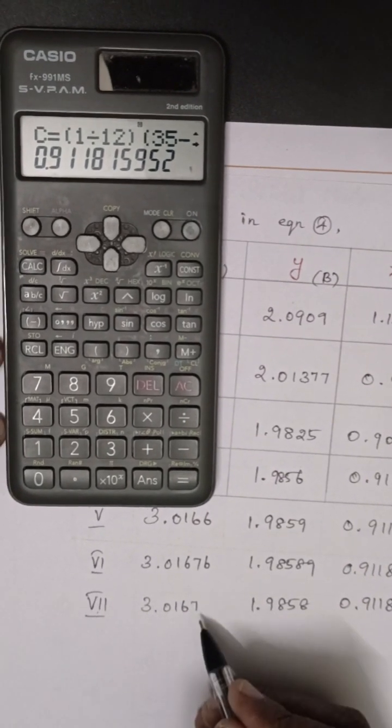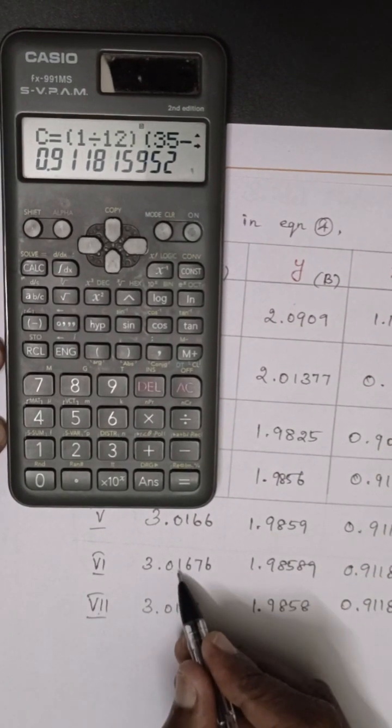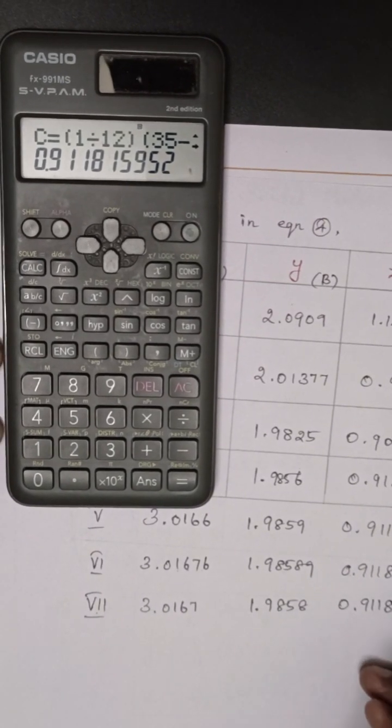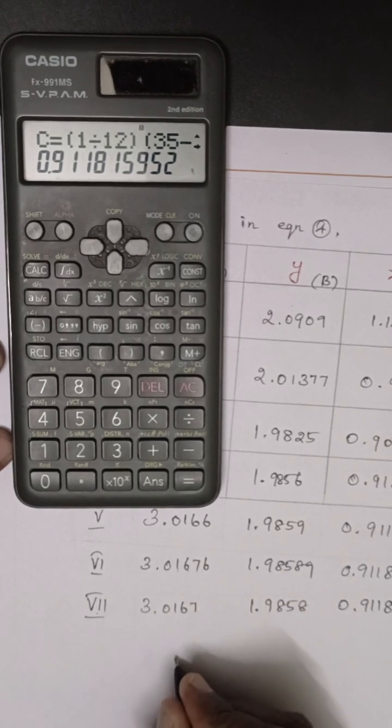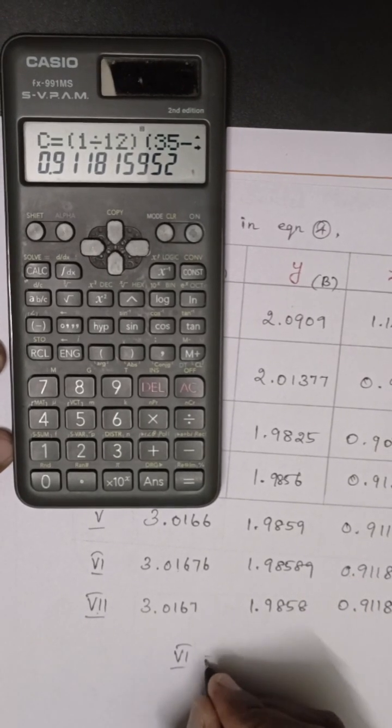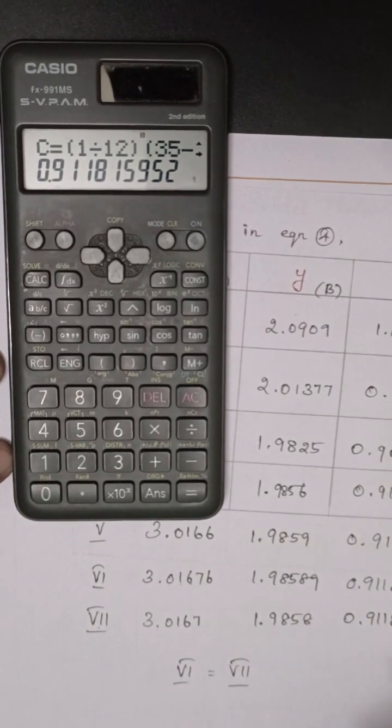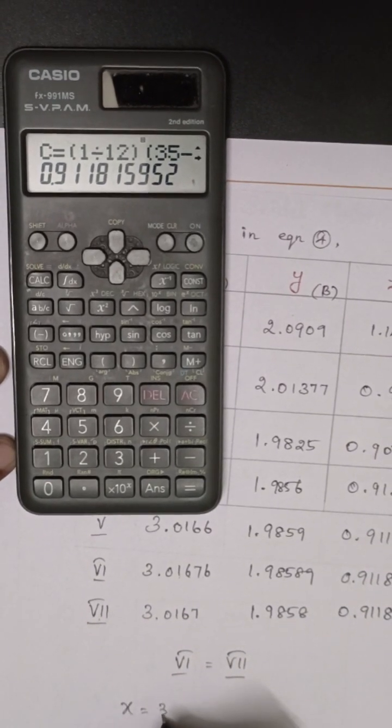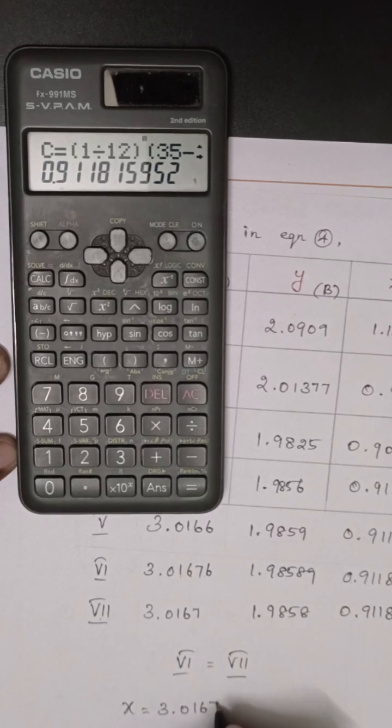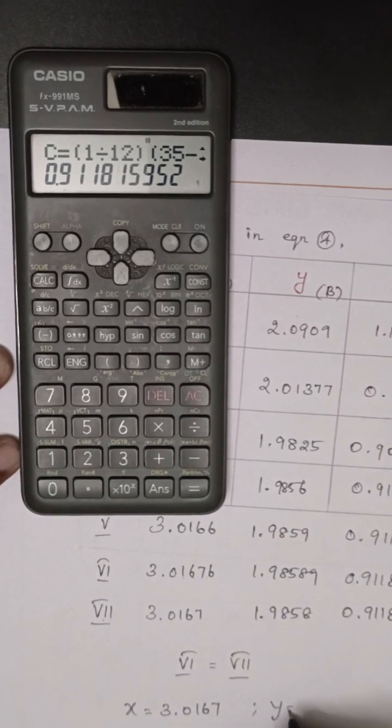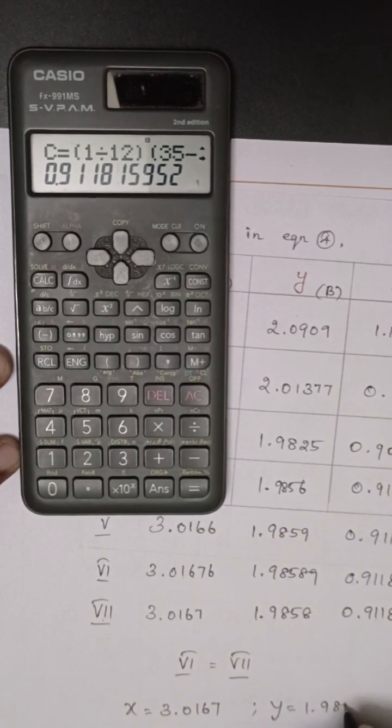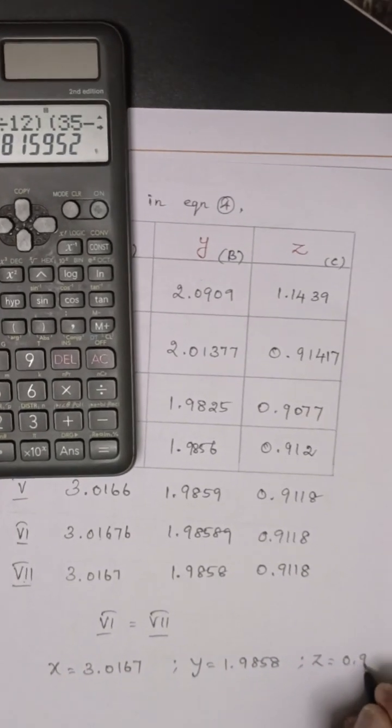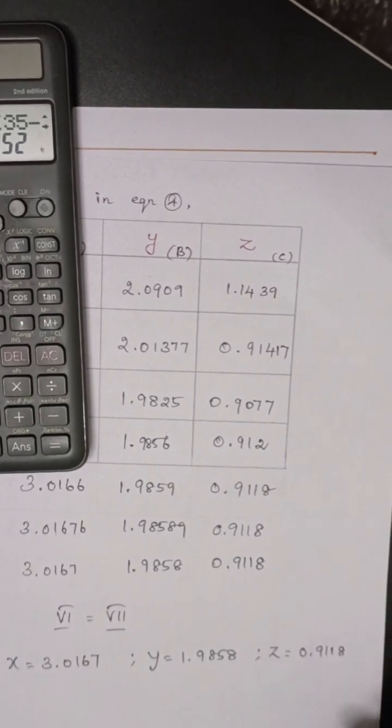See, the sixth and seventh iteration both having the same values: 3.0167, 1.9858, 0.9118. In this iteration, 6 and 7 are equal. Therefore, the x value is 3.0167, y value is 1.9858, and z value is 0.9118.